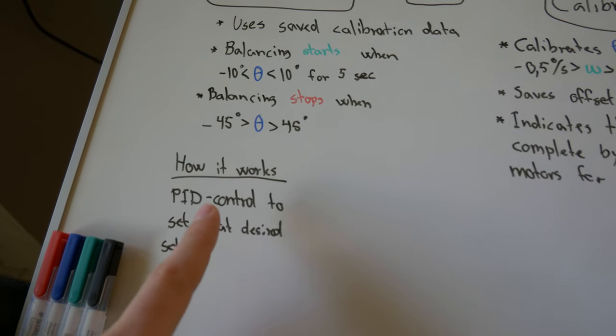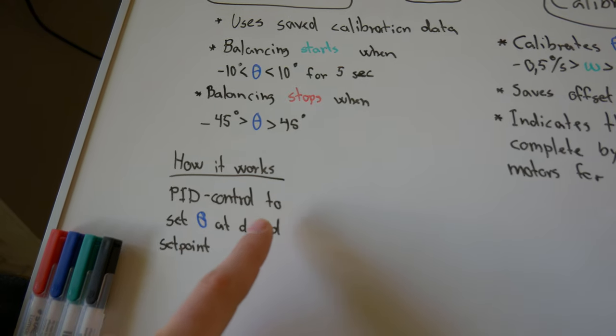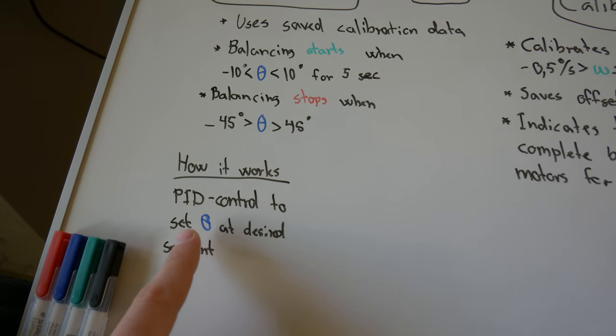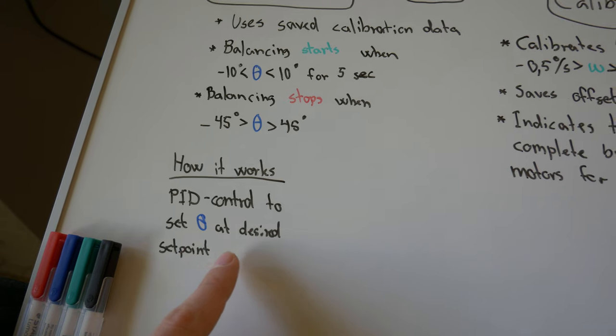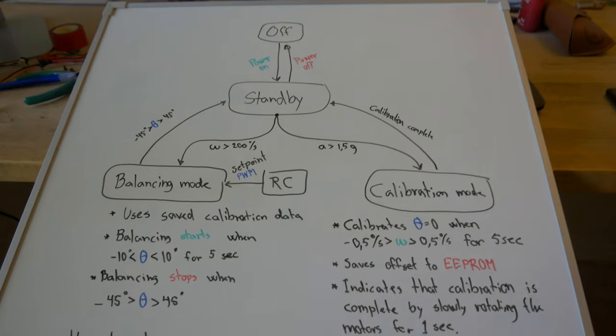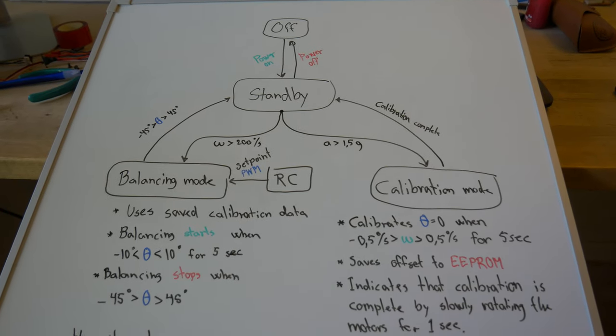This also means that if the vehicle for some reason falls over, it's going to stop on its own. It's basically a PID controller that tries to set the absolute angle at the desired set point.